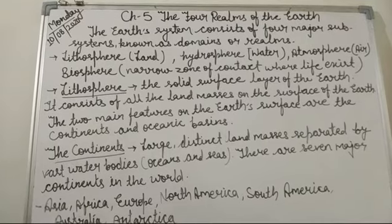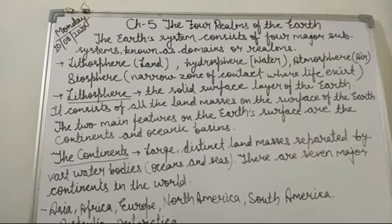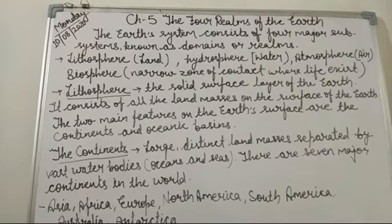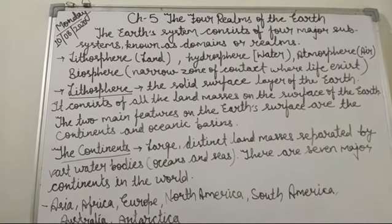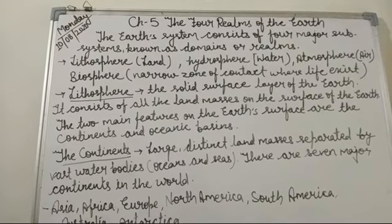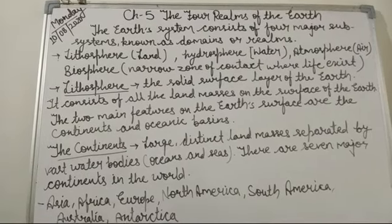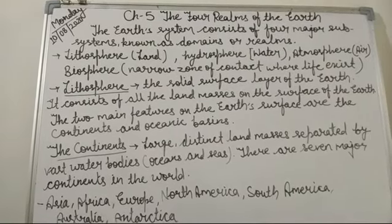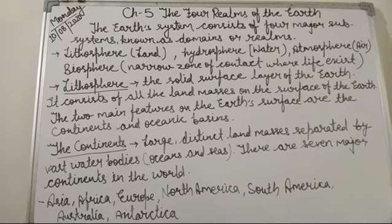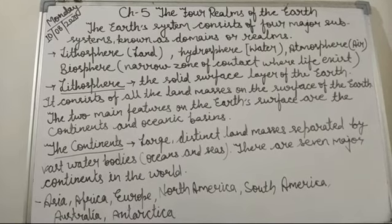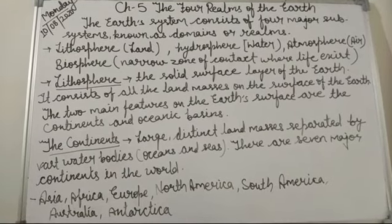Most of the land masses lie in the northern hemisphere. Students, recall the second chapter where we learned about the globe and its parallels. We discussed zero degrees, also known as the equator, which divides the globe into two hemispheres — the upper northern hemisphere and the lower southern hemisphere. Most of the land masses lie in the northern hemisphere, whereas in the southern hemisphere there are relatively fewer land masses.